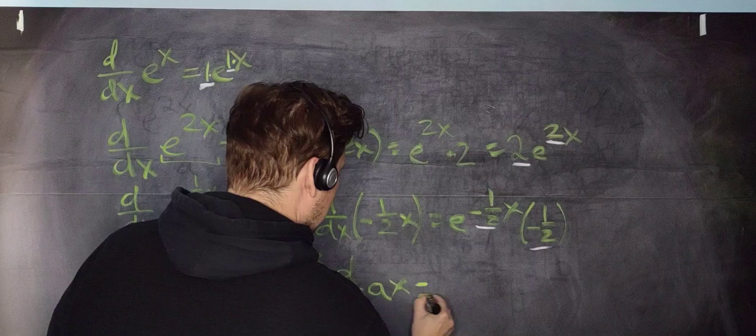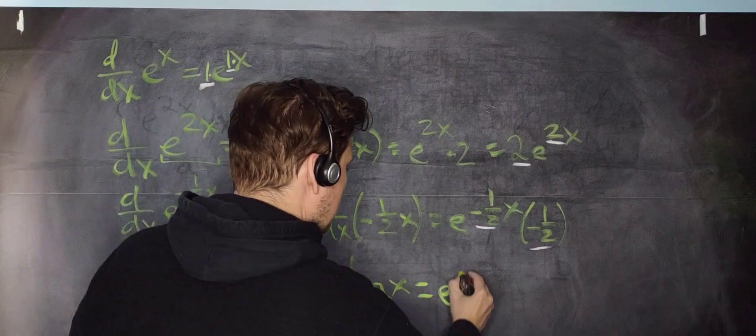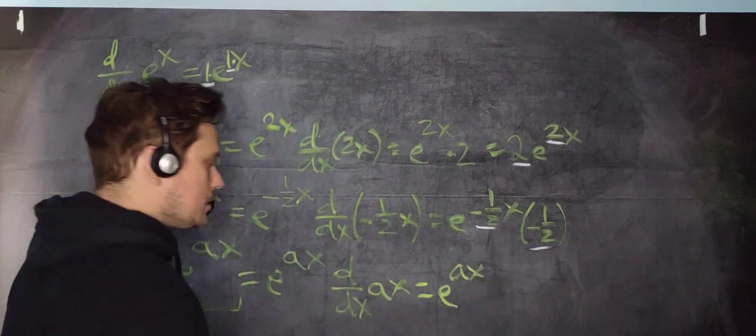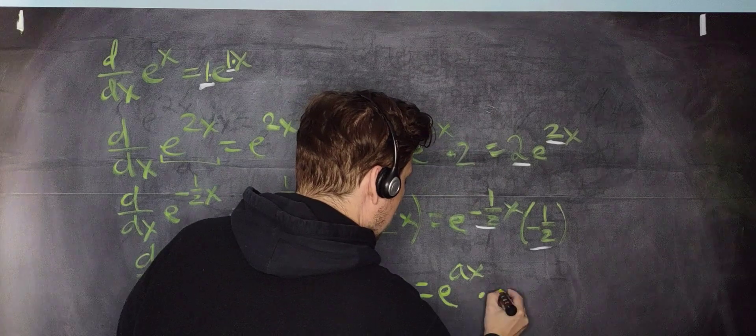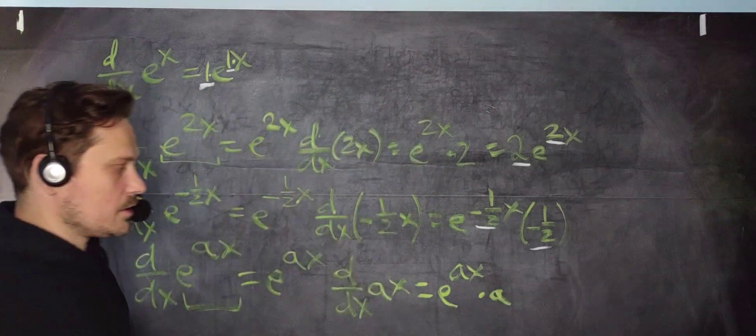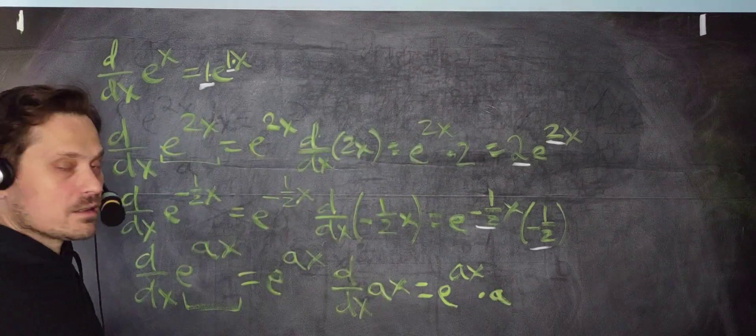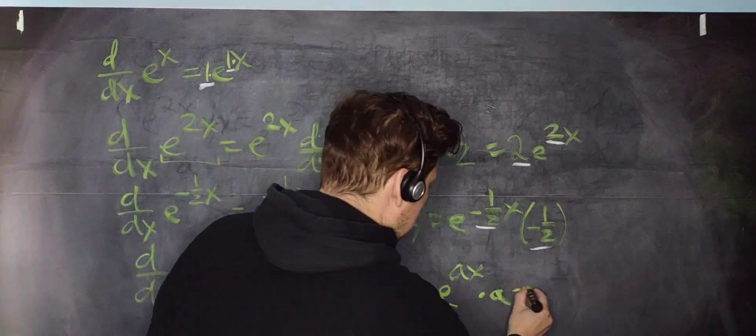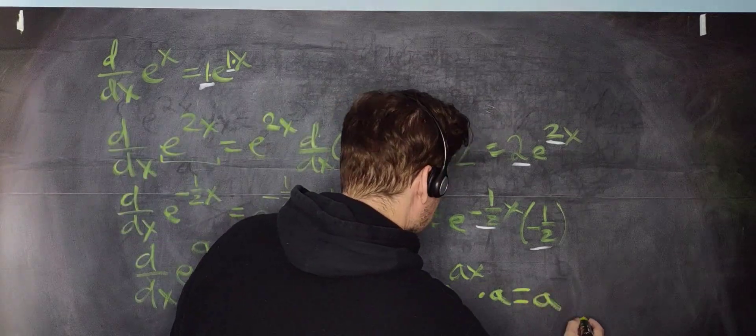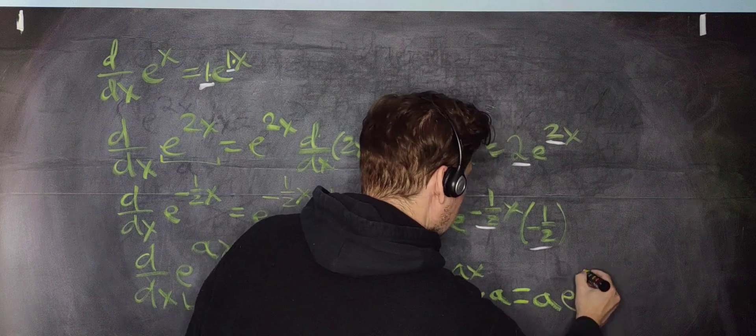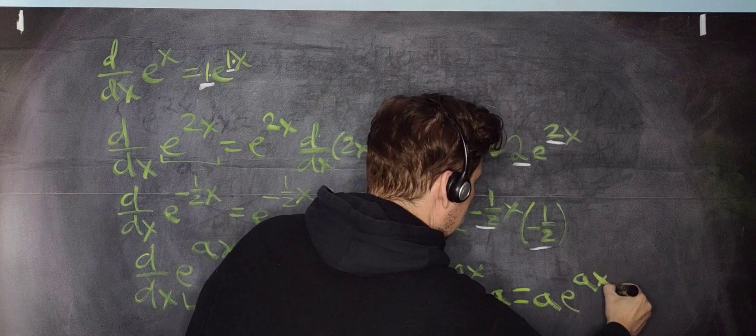So I'm going to have, in other words, the following. e to the ax, and I'm going to multiply this just by a, like this. That's the only thing that is left over, the a. And then again, by convention, the a gets placed out front. And so you're going to end up with a e to the ax. There you go.